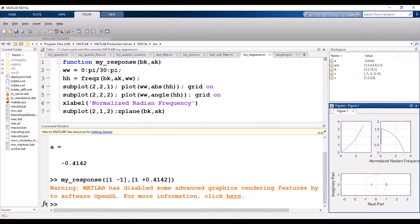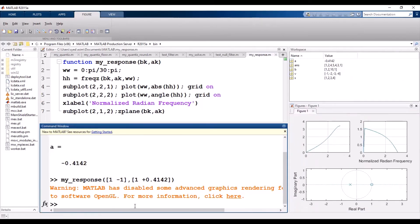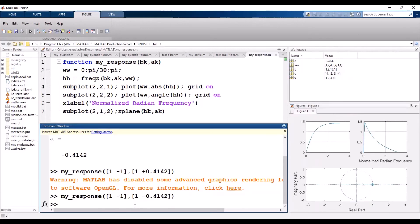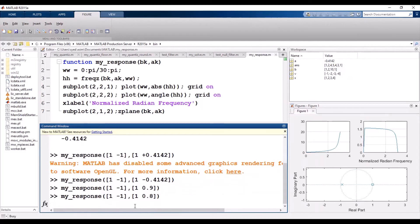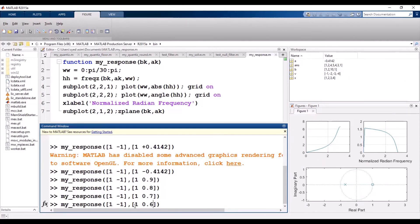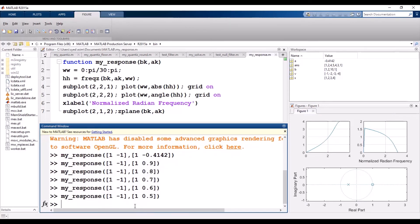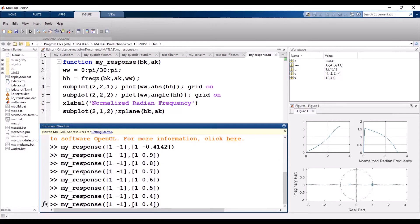You can easily change the frequency response. For example, 0.9, 0.8. You can see you can easily change the frequency response of the IIR filter by simply changing the position of the pole. It is very easy to implement.